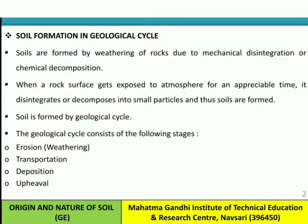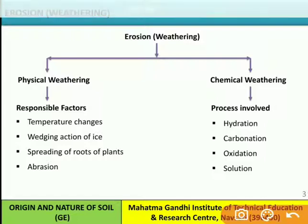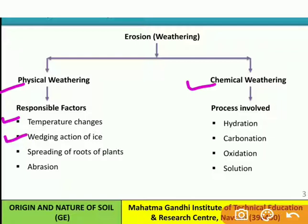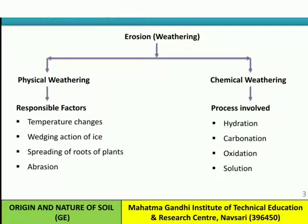Moving forward to erosion and weathering — there are basically two types: physical weathering and chemical weathering. The responsible factors for physical weathering are temperature changes, wedging action of ice, spreading of roots of plants, and abrasion. In the case of chemical weathering, the processes involved are hydration, carbonation, oxidation, and solution.